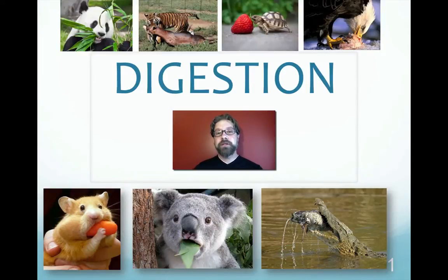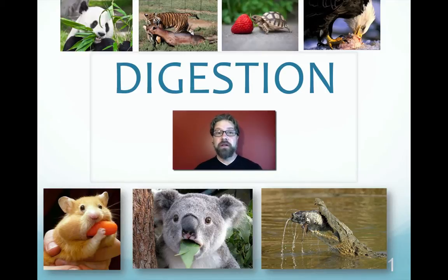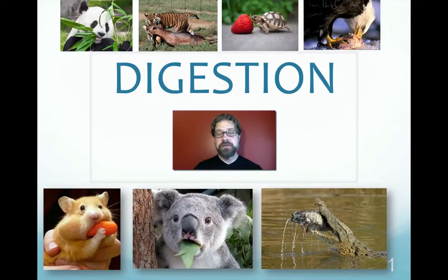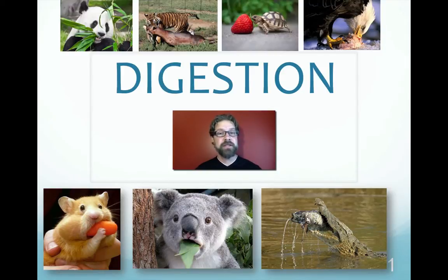Hi everybody. Today we're going to take a look at the process of digestion. The ability to acquire and utilize nutrients is one of the key characteristics of living things. Each animal you see on this slide is acquiring nutrients. The question we'll try to answer is how do we go from large pieces of nutrients, breaking them down into smaller versions, and getting them to their end destination — our cells — where they'll be utilized.